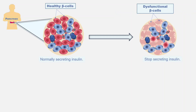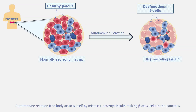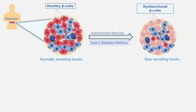There are two main reasons for damage of insulin-producing beta cells, and accordingly there are two types of diabetes. Firstly, beta cells are damaged by an autoimmune reaction. The immune system mistakes the body's own healthy beta cells for bacteria, and attacks and destroys these insulin-producing beta cells. After beta cells are destroyed, the pancreas fails to produce insulin. Diabetes caused by destruction of beta cells by autoimmune reaction is termed Type 1 diabetes, which constitutes only 5 to 10 percent of all diabetics.